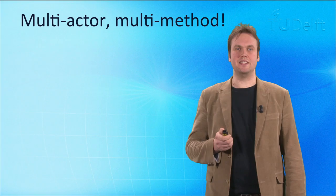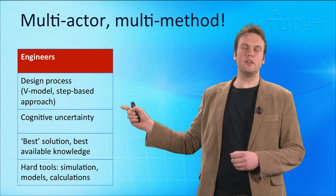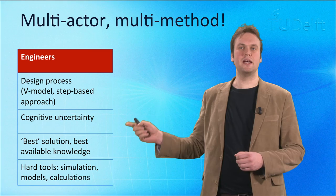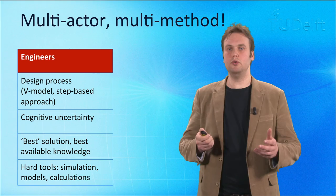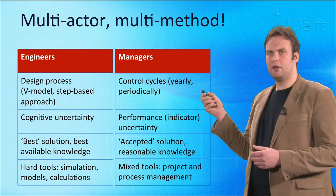If you have multiple actors, you also need multiple methods. If you have engineers, they follow rigid design processes — V models in systems engineering, for instance. There is cognitive uncertainty involved because they don't know certain things, and they try to find the best solution with the best of their available knowledge. To do so they use what we call hard tools: simulations, models, calculations — a lot of numbers that together make a new, better design.